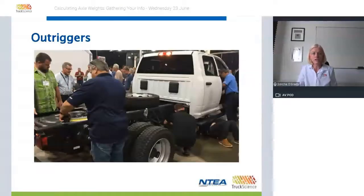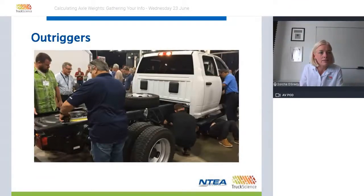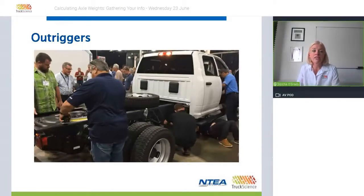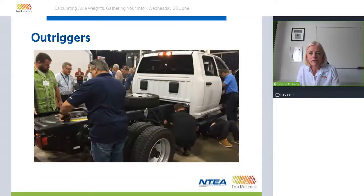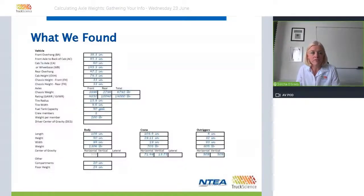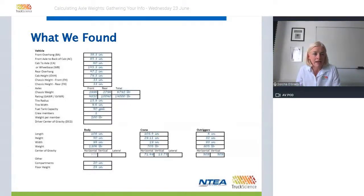For the outriggers, we're going to imagine that we've used a scale and measuring tape to measure weights and dimensions manually. Bringing all of that information together, the document has been filled in with the front overhang, cab to axle, rear overhang, chassis weights, body length, height, width, and so on.